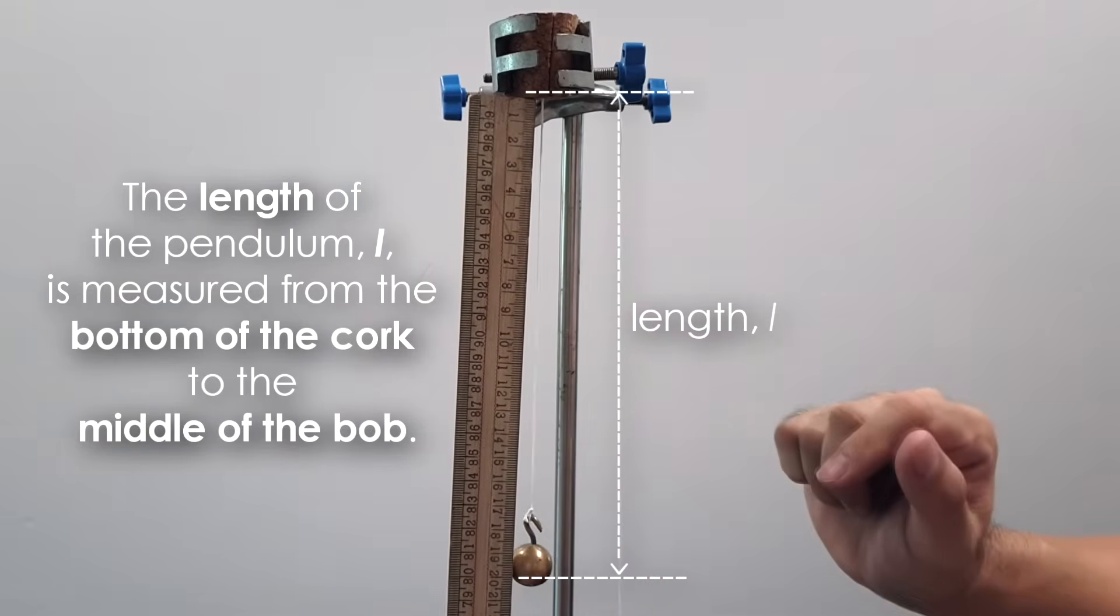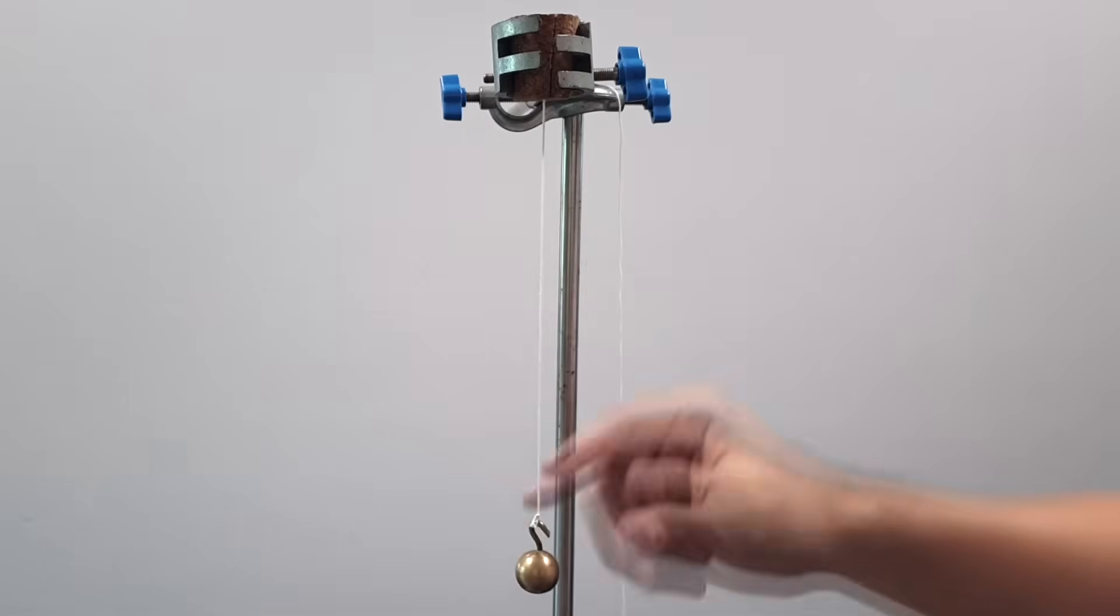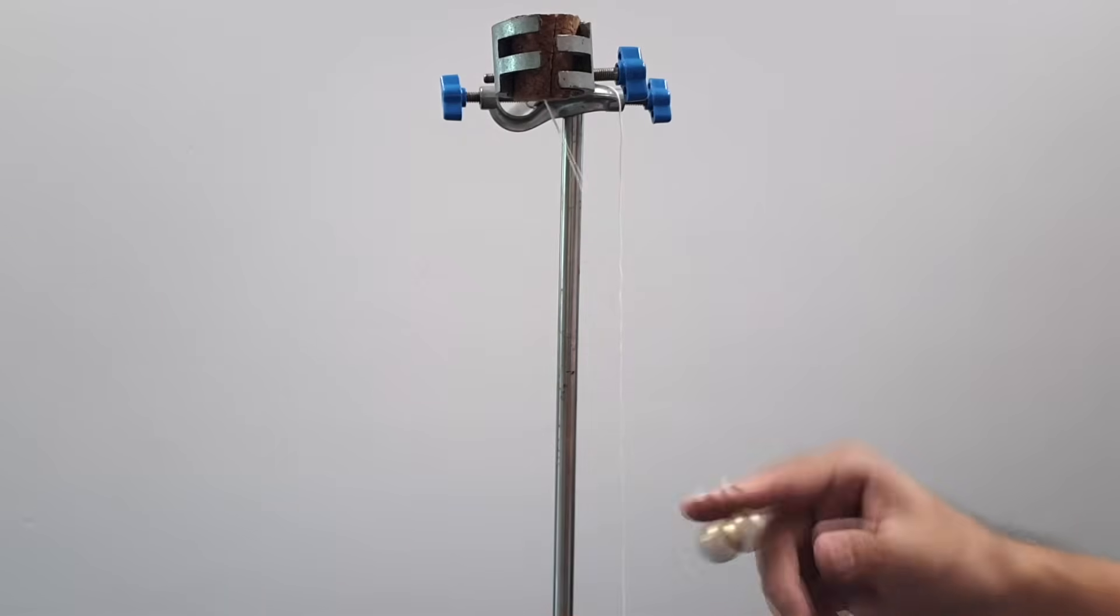That you set. So you tighten up the clamp so that the length of the pendulum bob will not change when you do the swinging or oscillation later on.